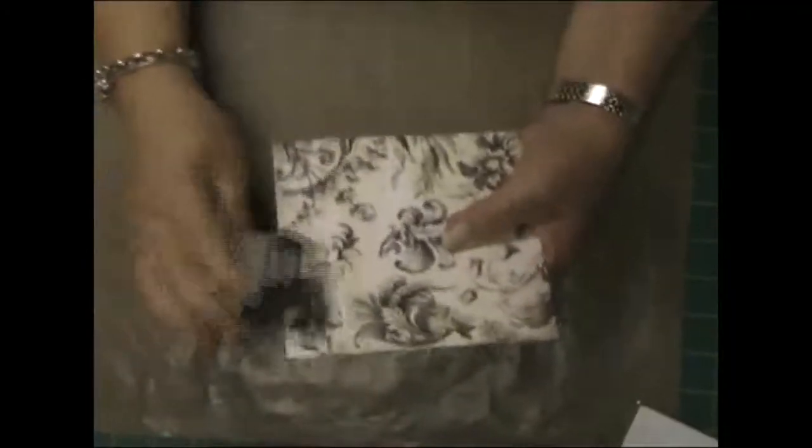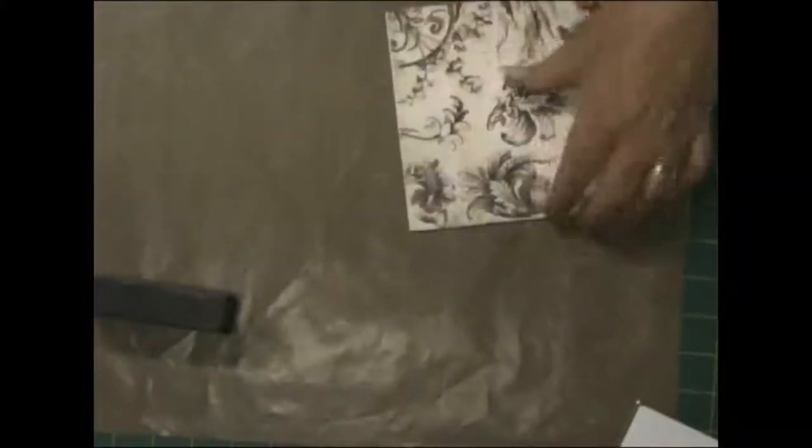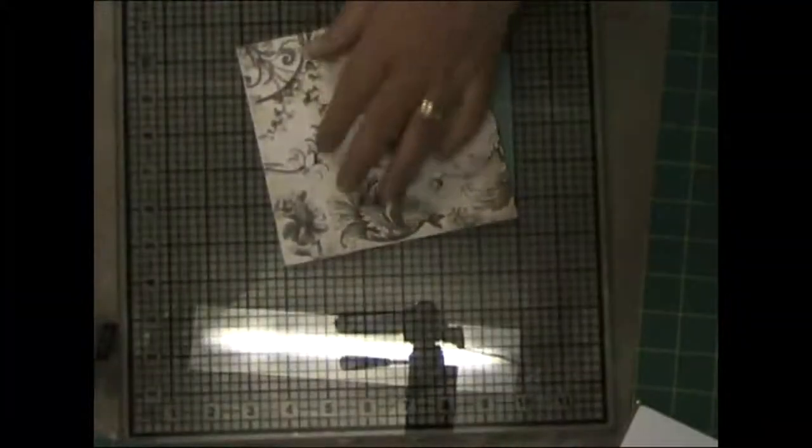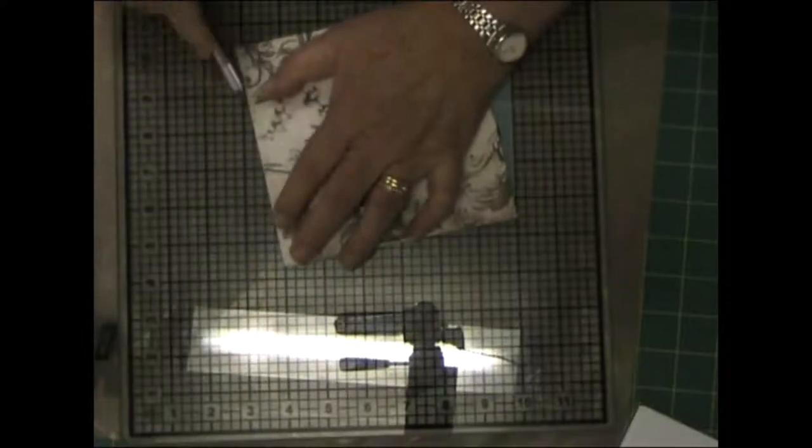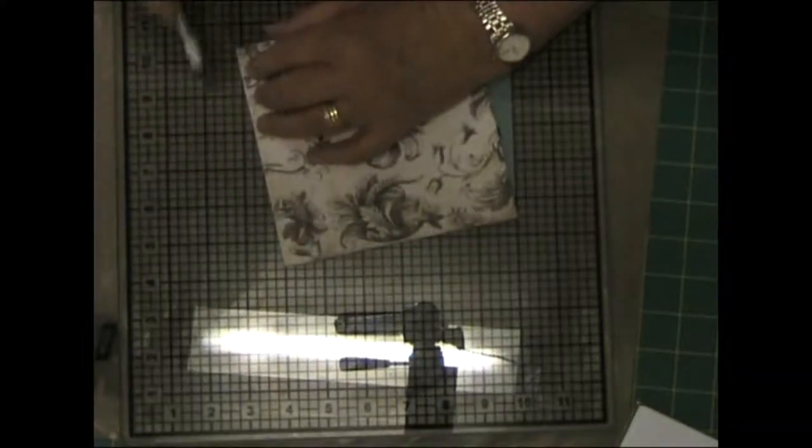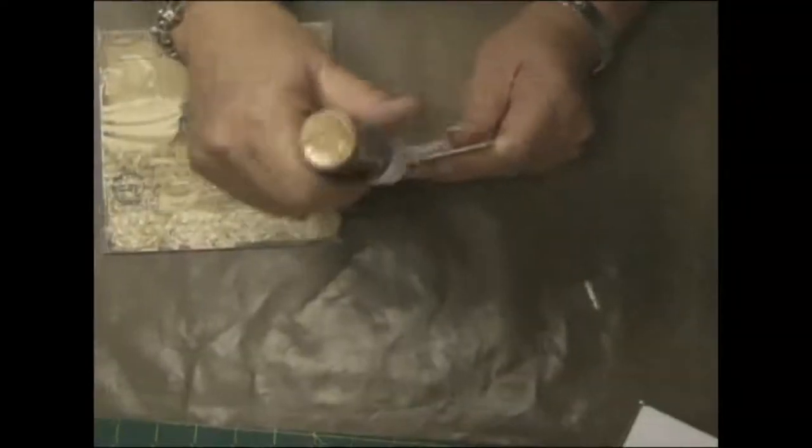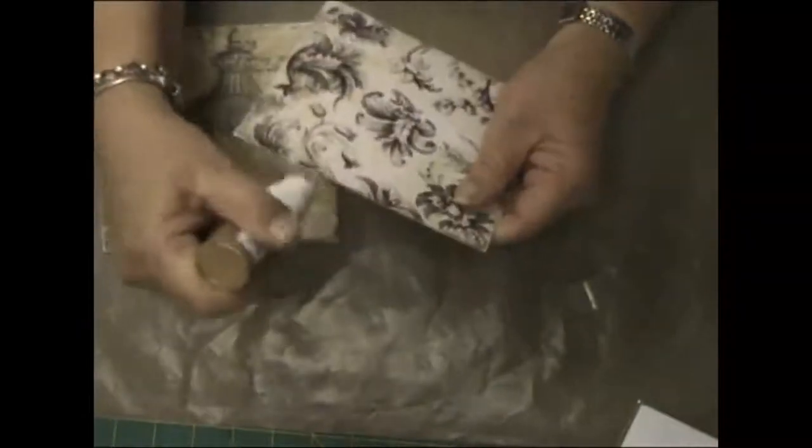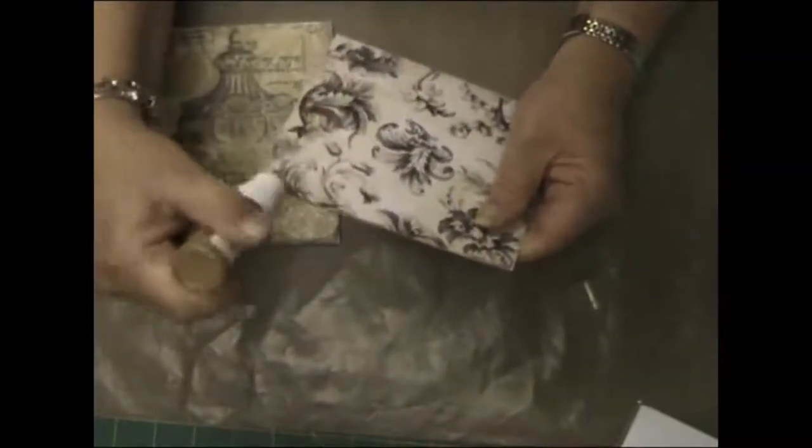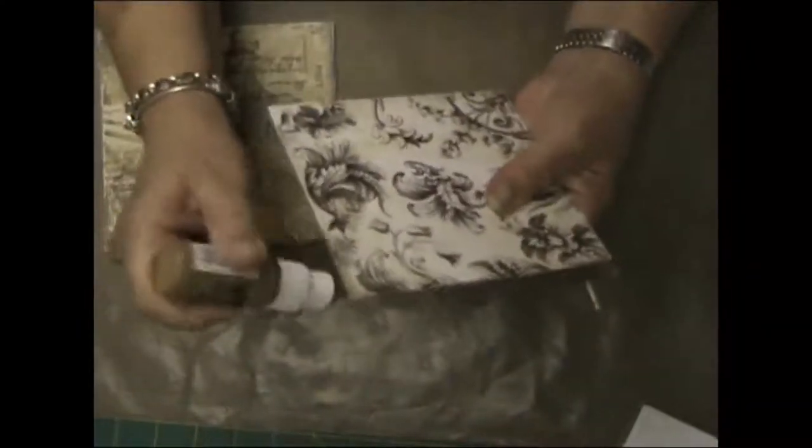So I've adhered it to the chipboard and then sanding down the edges and just cutting away some excess paper there. And now just dabbing it all around with the gold Adirondack paint.